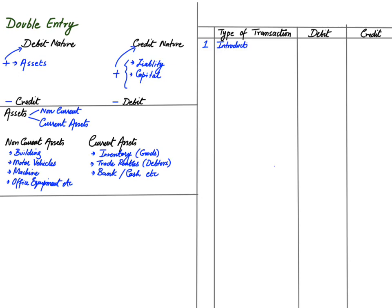The first transaction is introduction of capital into the business. When starting a business, you need capital. We have already learned that capital has a credit nature, so whenever capital is increased we will be crediting the capital account. A very common thing is to bring cash or bank balance into the business when starting. I am bringing cash or bank from my personal finance to run the business. Bank is an asset for the business, and whenever an asset increases it will be debited — so we will be debiting a bank account.